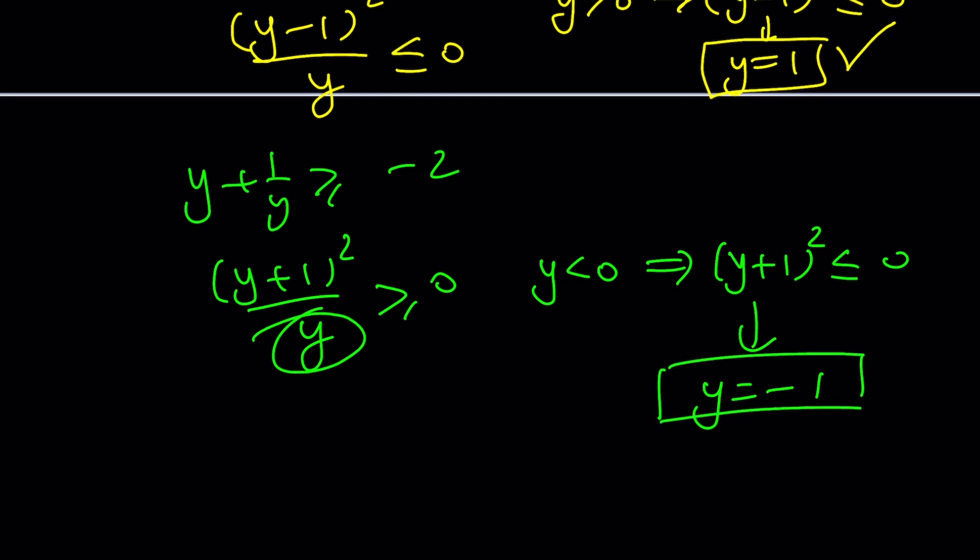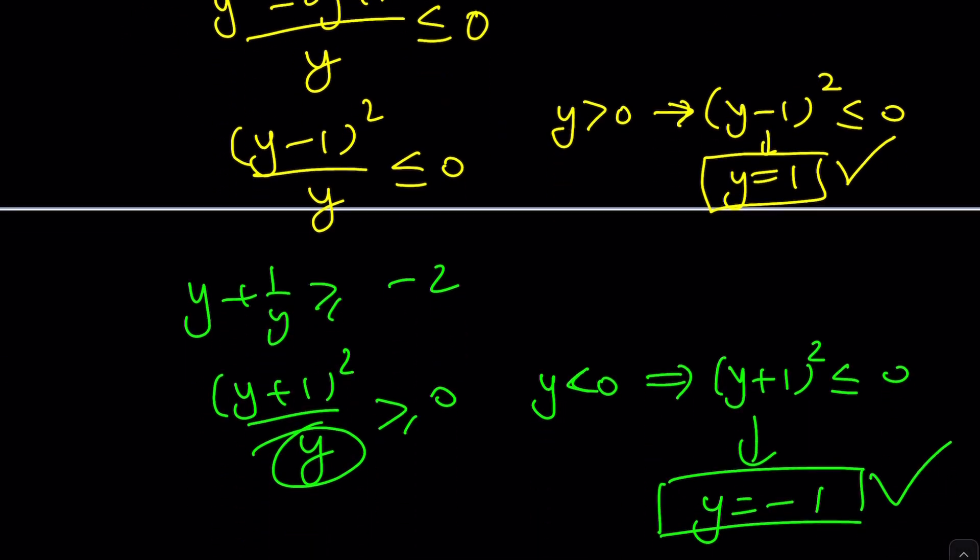And it's true because we assume that if Y is less than zero, this is true. So, it's good. Everything is checked. We get two solutions, so on and so forth. You get the idea?